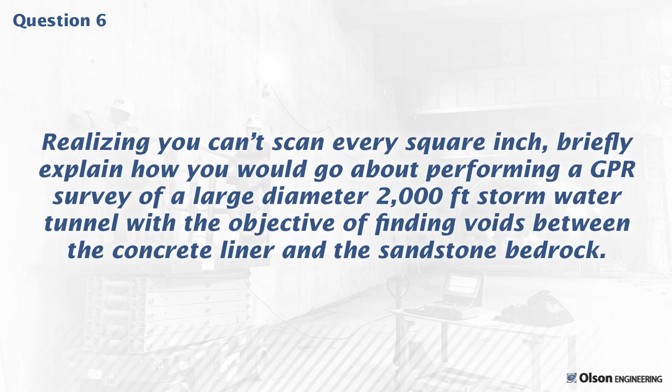Q: How would you go about performing a GPR survey of a large-diameter 2,000-foot stormwater tunnel to find voids between the concrete liner and sandstone bedrock? We would scan longitudinally, with some radial scans depending on diameter. Depending on liner thickness, we'd use nominally 2 GHz antennas — or down to 900 MHz or less for really thick liners. We can also use dual-frequency antennas. The frequency selection depends on the thickness and depth of investigation needed.